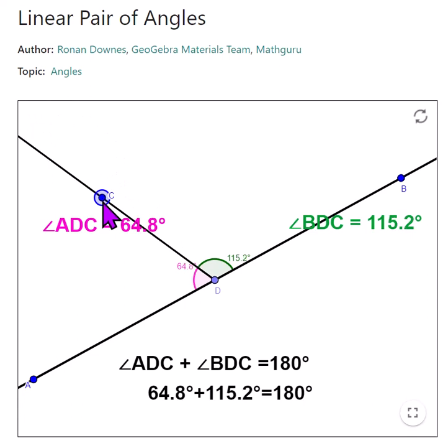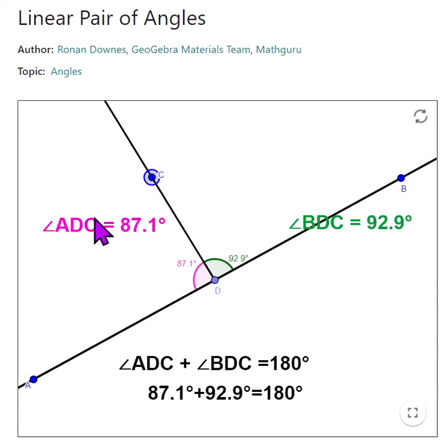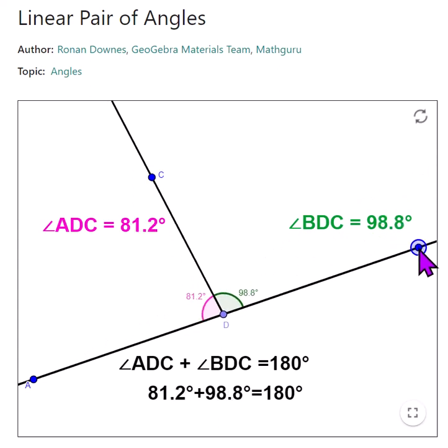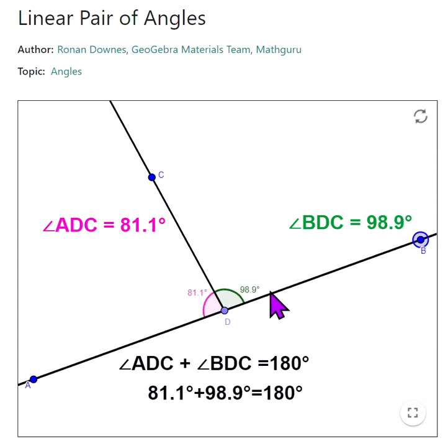When you have these two angles, this pink angle and this green angle, adding together to make up half of the plane of a straight line...